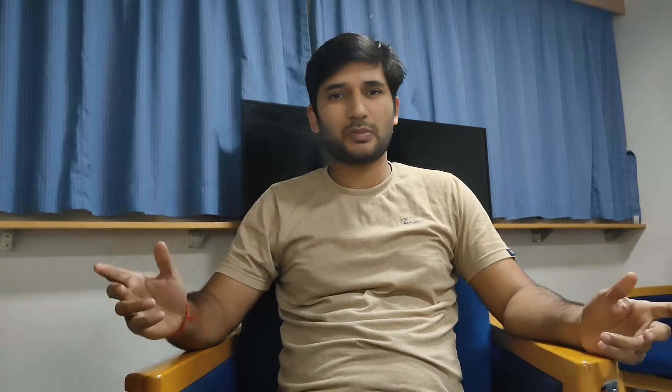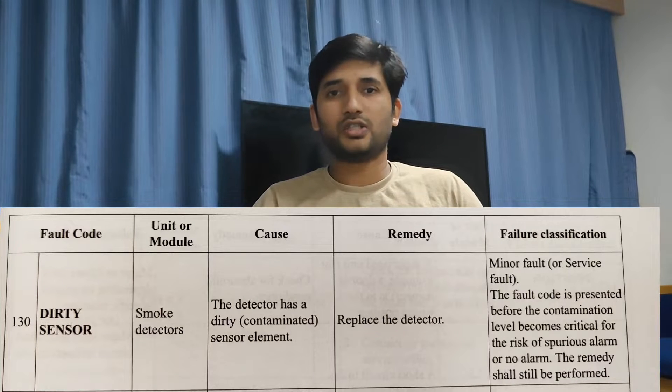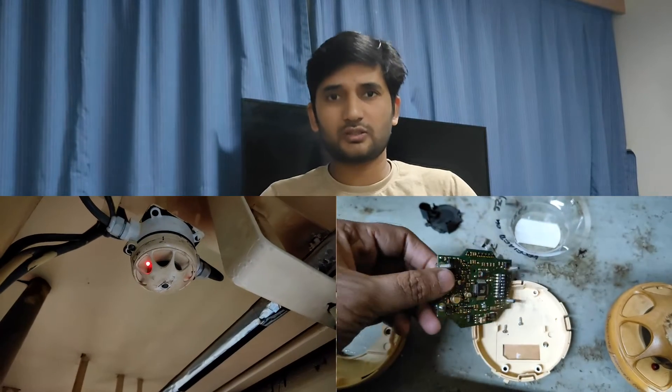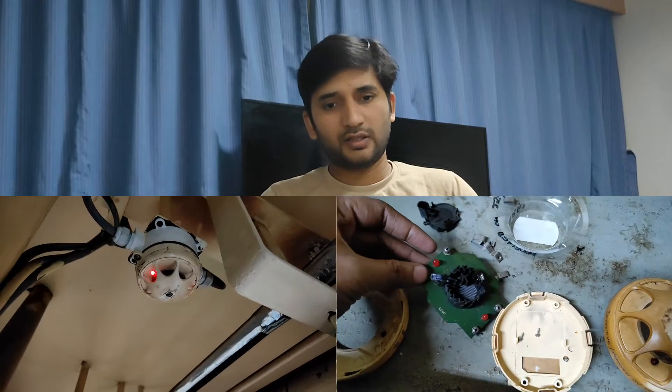The second fault is the dirty sensor. As per the manual — as per the Consilium manual — they recommend to change the sensor. But you should try to clean it first. If it is a flame sensor, you can clean it with cotton or use a tissue paper to clean the glass. If it is a smoke sensor, you can dismantle it — like I have dismantled it — and you can clean all the lenses and all the areas including the mesh. After cleaning, you can try it again. If it is working properly and your fault is removed, then it is good; otherwise, you have to change the sensor.